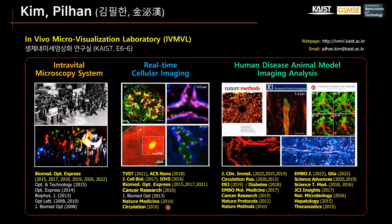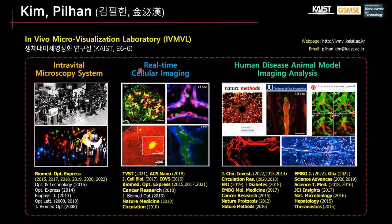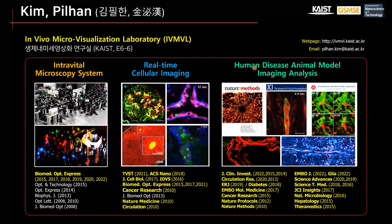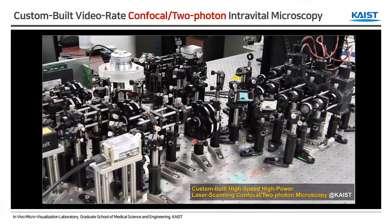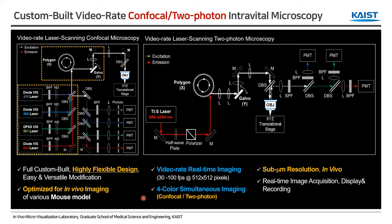In my lab, we develop intravital microscopy systems that can capture real-time cellular-level images from various tissues and organs. Through collaboration, we have done extensive live imaging analysis in various human disease animal models. This is the custom-built video-rate confocal and two-photon intravital microscopy system in my lab at KAIST. It is a fully custom-built system with a very flexible design, so I can easily modify it for each specific live animal imaging application.